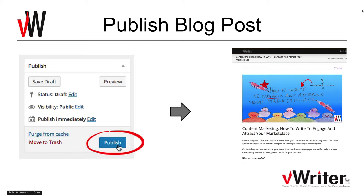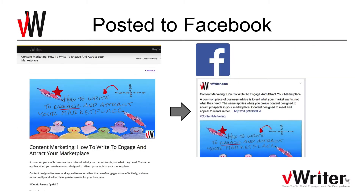Now I'm going to show you what happens as a result of publishing a blog post. The blog is updated, vWriter notices there's new content on the blog feed, and based on the channels that were set up, within a couple of minutes it had auto-posted to Facebook and the other social media channels. It had shortened the link automatically using Bitly, so anyone clicking on it goes back to the original post, and it added the hashtag I set on the channel.